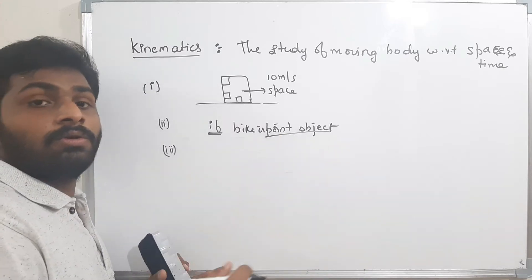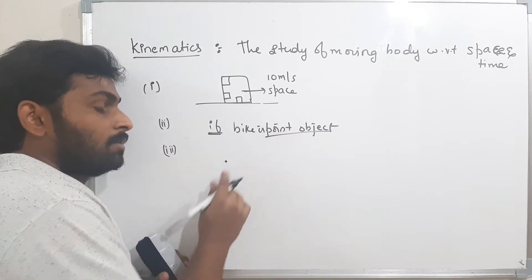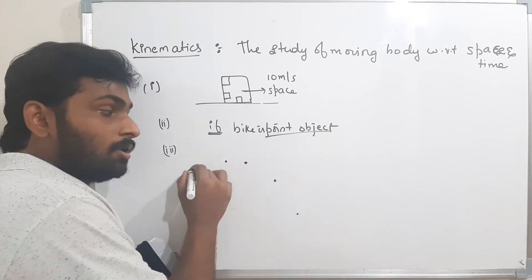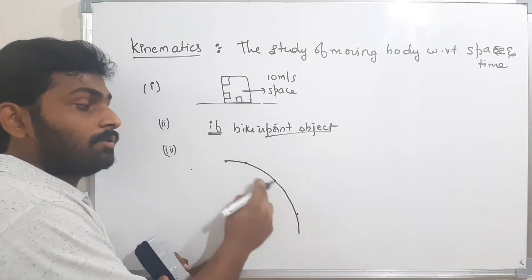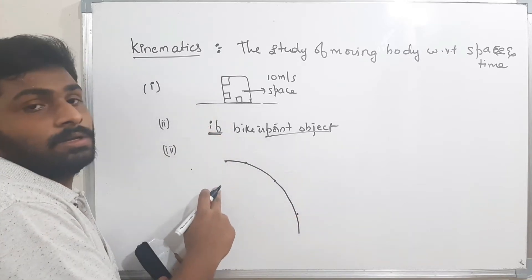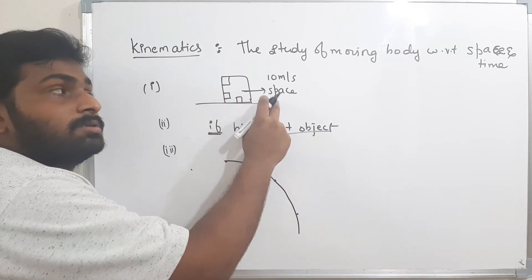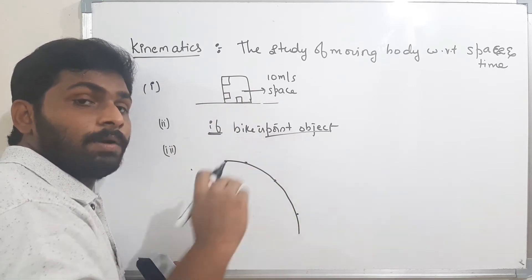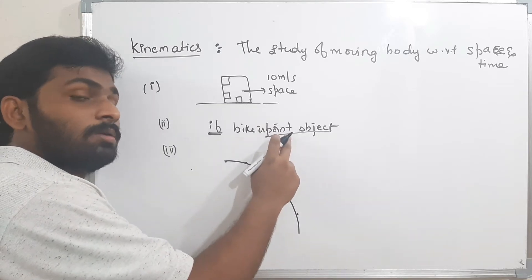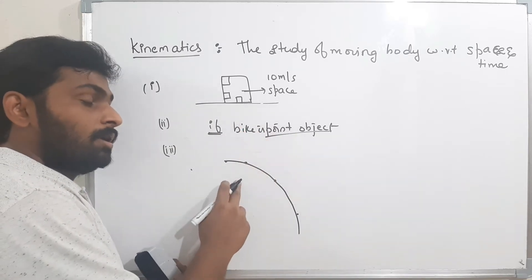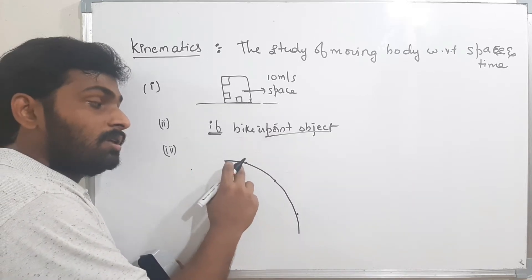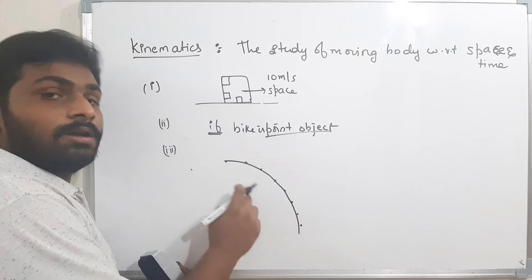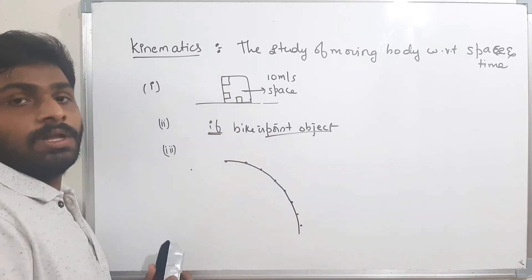Third assumption: I have to join each point in which direction the body is moving to know the direction of the body. Initially the body is here; after one second it moved here, after another second here, and so on. By joining all these points I know the direction of the body. These are the three assumptions: one, the motion of each part equals the overall motion; two, treat the body as a point object when distance is much larger than size; three, join successive positions to find direction.